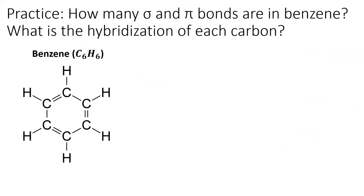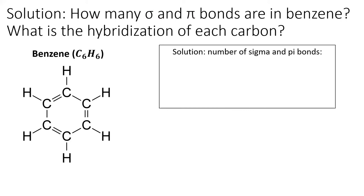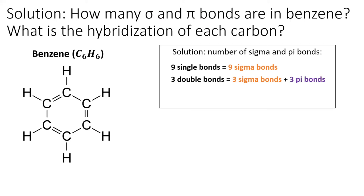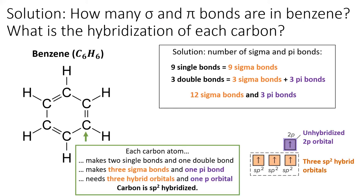Practice problem: how many sigma and pi bonds are in benzene, and what is the hybridization on each carbon? Benzene has nine single bonds and three double bonds. Each single bond is a sigma bond; each double bond is one sigma and one pi bond. In total, there are 12 sigma bonds and three pi bonds. Each carbon makes two single bonds and one double bond — three sigma bonds and one pi bond — meaning each carbon needs three hybrid orbitals and one unhybridized p orbital. This corresponds to sp2 hybridization.